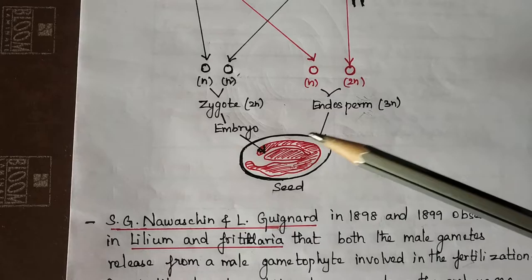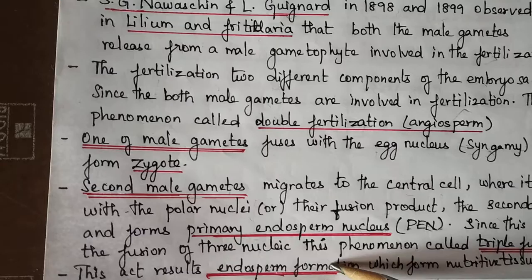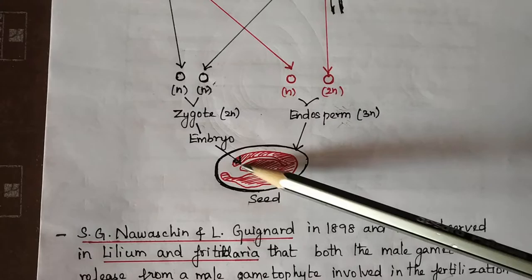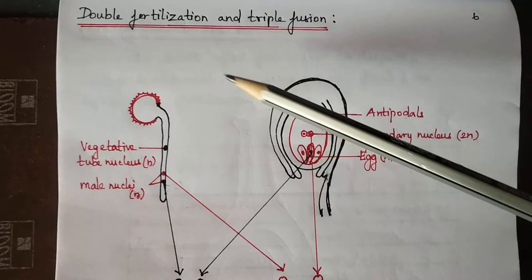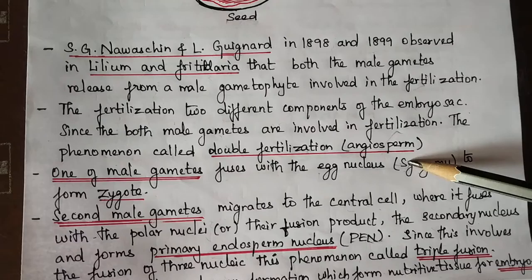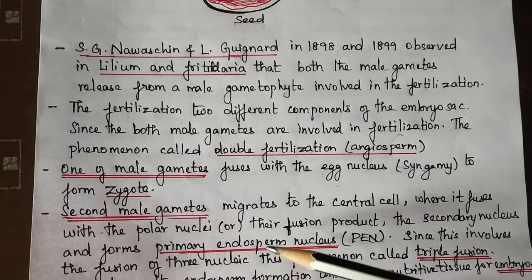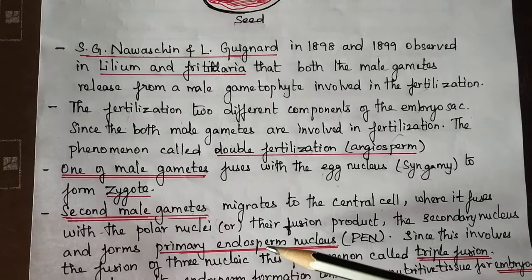Triple fusion results in endosperm formation. The endosperm serves as a nutritive tissue for the developing embryo. To summarize: syngamy (fusion of one male gamete with the egg) and triple fusion (fusion of the second male gamete with the secondary nucleus) together constitute double fertilization, which leads to endosperm formation.